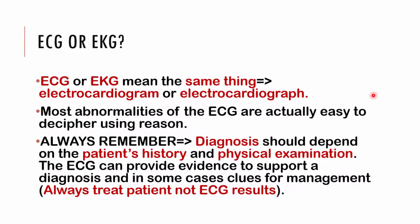Do we call it an ECG or an EKG? They pretty much mean the same thing. In some countries they refer to it as an EKG, in others as an ECG, but both mean you're carrying out electrocardiography — producing an electrocardiogram. This is simply a depiction showing the electrical activity of the heart. Most ECG abnormalities, if you use reasoning to work through them, are very easy to follow. It's easy to pick up abnormalities if you have a systematic approach.